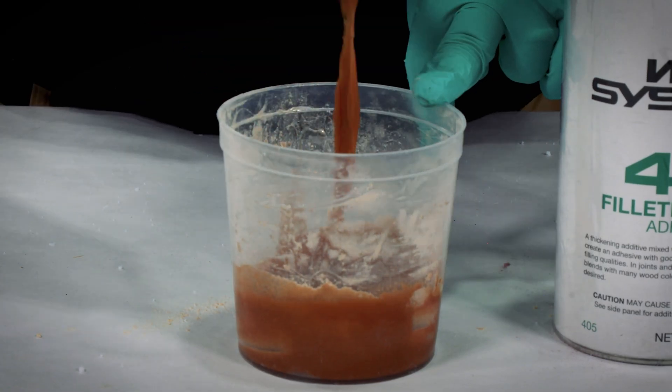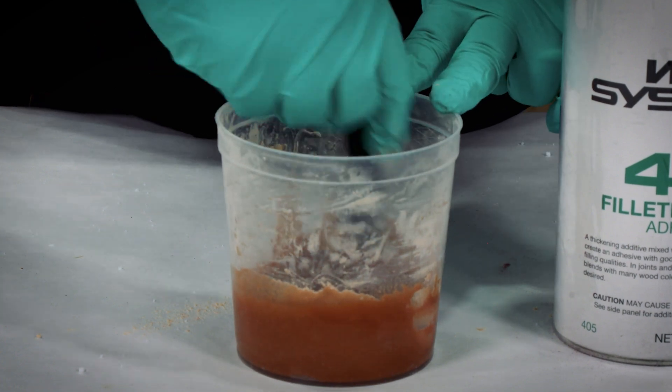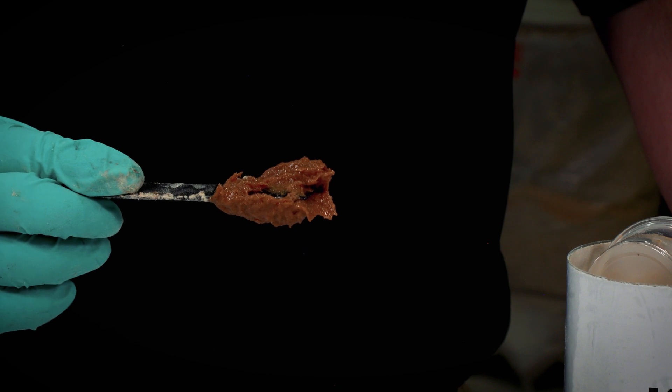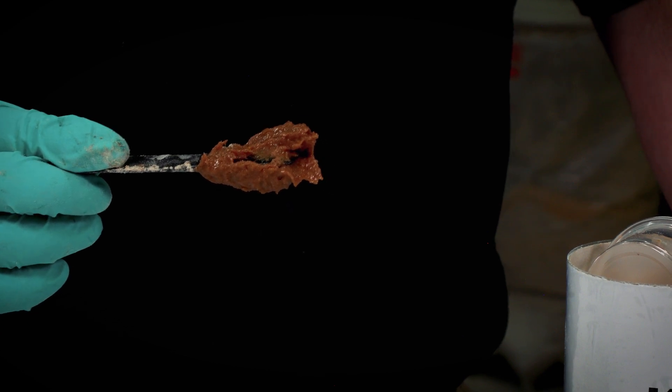First, we'll talk about the 405 Filleting Blend. The 405 is a wood-toned filler, similar to a mahogany color, and it's really great if you're doing a clear coat over your fillets.